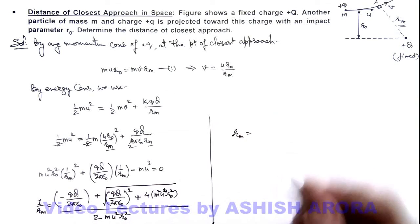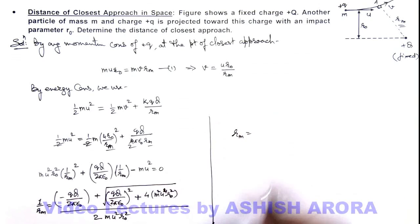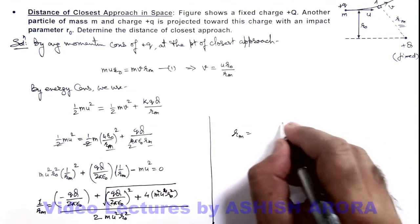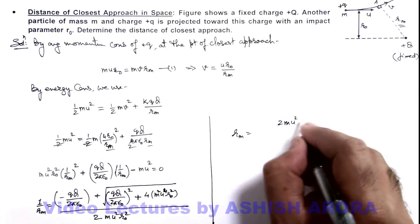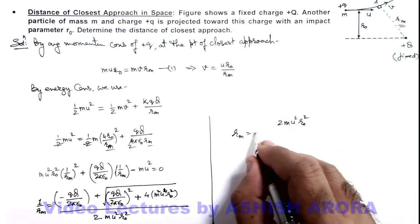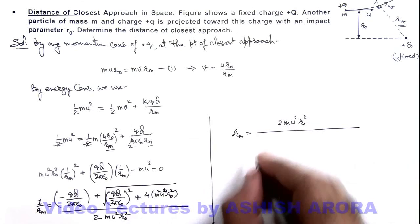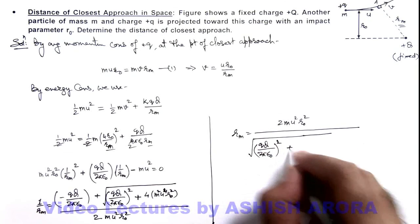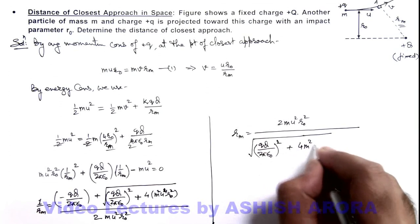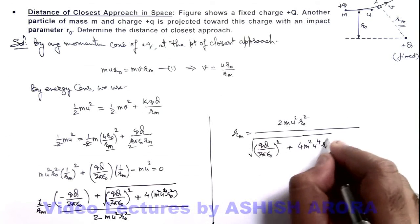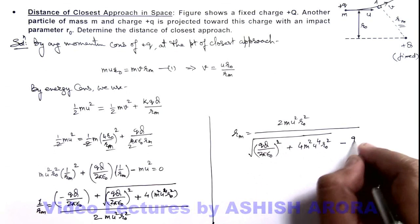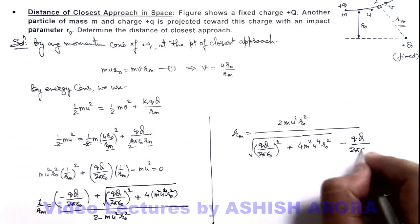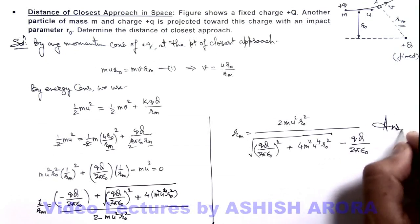which I can write here as reciprocal of this, which is 2mu²r₀² divided by √[(qQ/2πε₀)² + 4m²u⁴r₀²] - qQ/2πε₀. So that will be the answer to this problem.